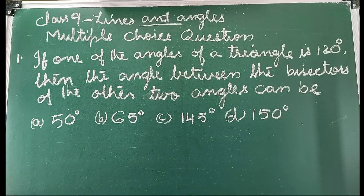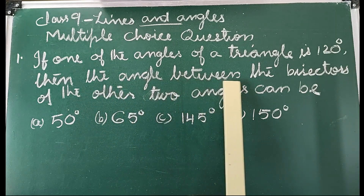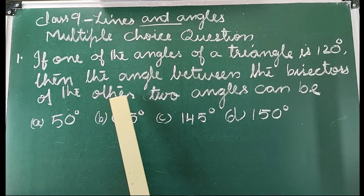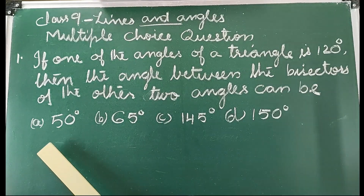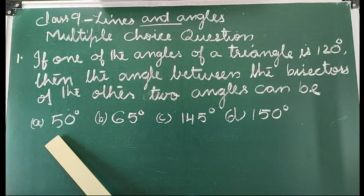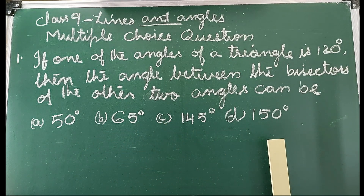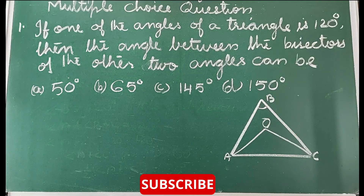First question: if one of the angles of a triangle is 120°, then the angle between the bisectors of the other two angles can be. Options given: 50°, 65°, 145°, 150°. Let us solve this question.